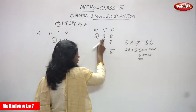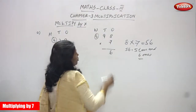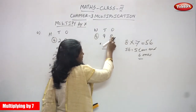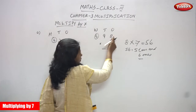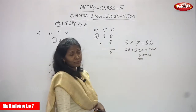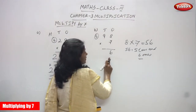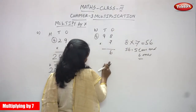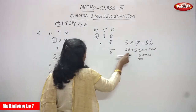Now I am going to multiply the tens place by 7. The number in the tens place is 9. I already multiplied 8 into 7 to get 56 — that is 5 tens and 6 ones. The 6 ones are written in the ones place, and the 5 tens carryover goes to the tens place value.